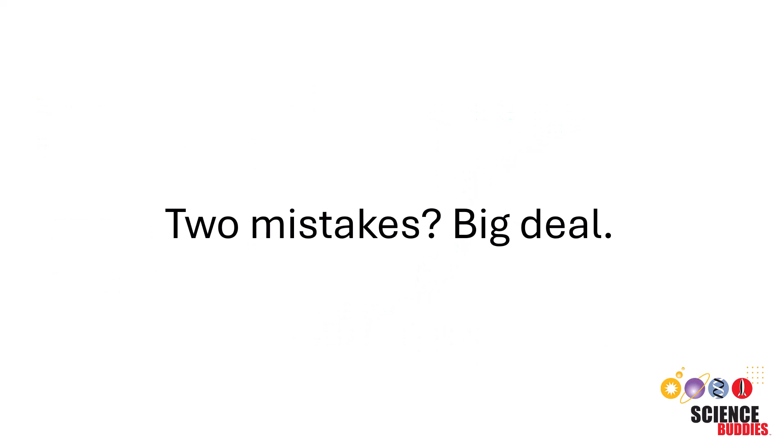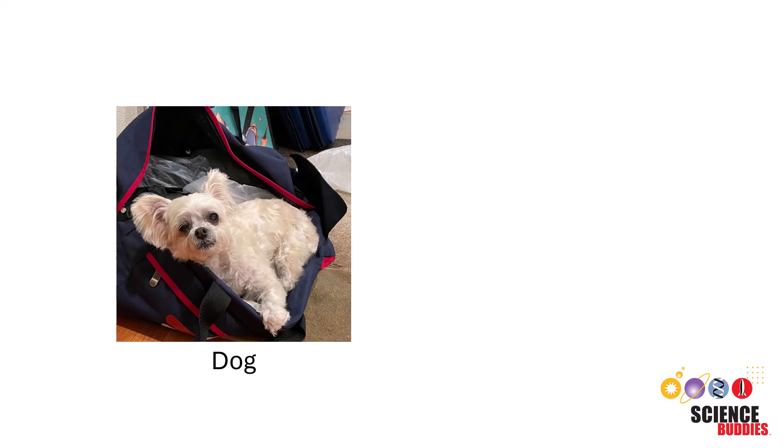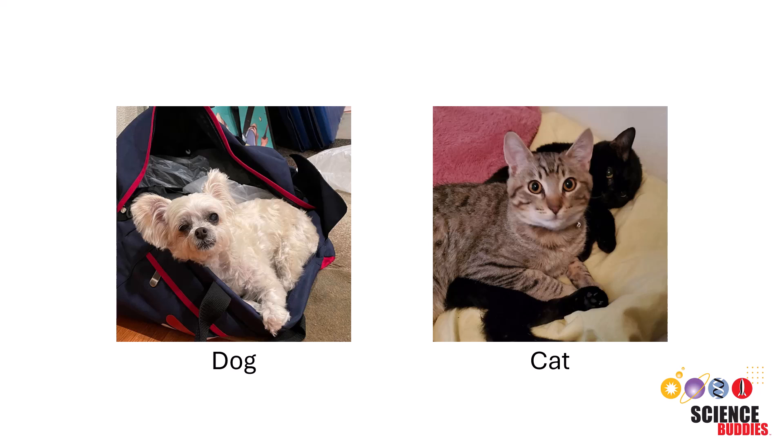Now, two mistakes may not seem like a big deal, and it may not be in some cases. For instance, if you are creating a model that classifies an animal as a dog or a cat, maybe it's okay if the model is not 100% accurate.